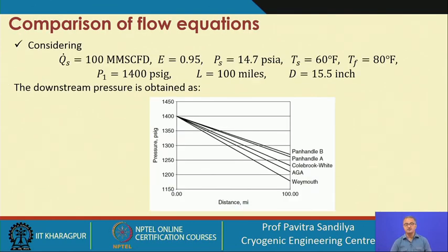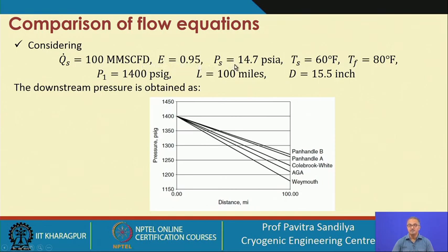Whenever we have so many equations available, the question is how to choose the right expression for our system. We can look at predictions of downstream pressure using typical values. To compare, we take a standard volumetric flow rate of 100 million standard cubic feet per day, an efficiency factor of 95%, standard pressure of 14.7 psia (about 1 atmosphere), standard temperature of 60°F (about 15.6°C), actual temperature of 80°F, actual inlet pressure of 1400 psig, pipeline length of 100 miles, and inside pipe diameter of 15.5 inches.